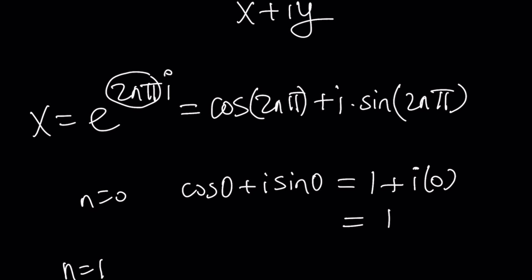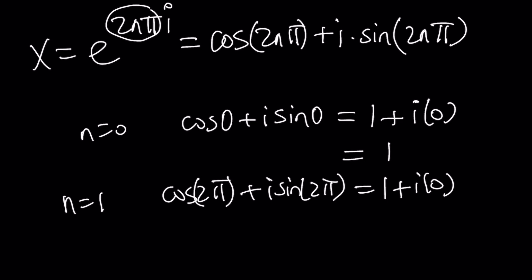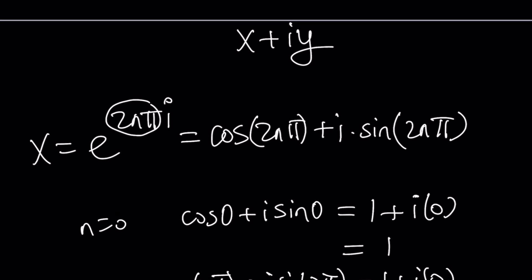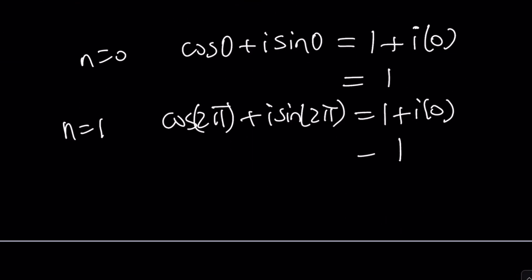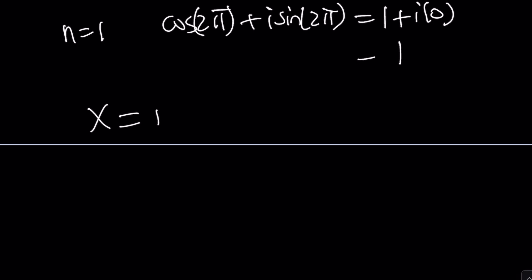What happens if n is equal to 1? Then you get cos(2π) + i sin(2π). And what is cos(2π)? 1 again. Sin(2π) is 0. So this is going to be 0 times i. And that's going to be 1 again. So in other words, x is equal to 1.